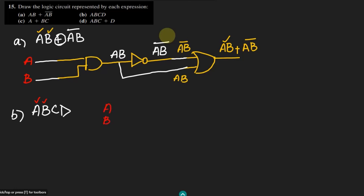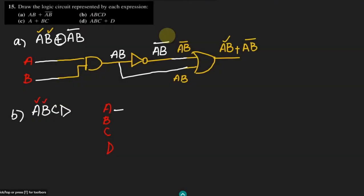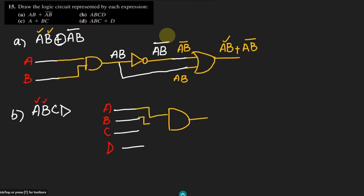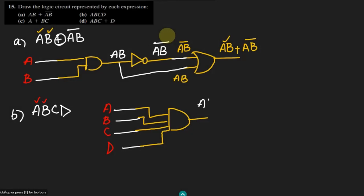This one is also very easy in which we have to find the inputs first. We have 4 inputs here which are a, b, c, d. These will have first, second, third and fourth signal, and here we will have to multiply them together in order to get the answer. That is the product of them and it will be abcd. So that is the answer of part b.